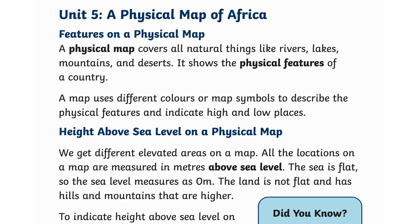Welcome to Element Z3, Unit 5: A Physical Map of Africa. A physical map covers all natural things like rivers, lakes, mountains, and deserts — it shows the physical features of a country. A map uses different colors or map symbols to describe the physical features and indicate high and low places.